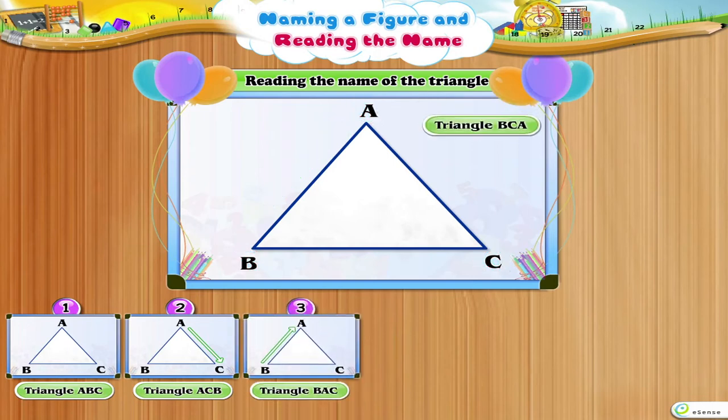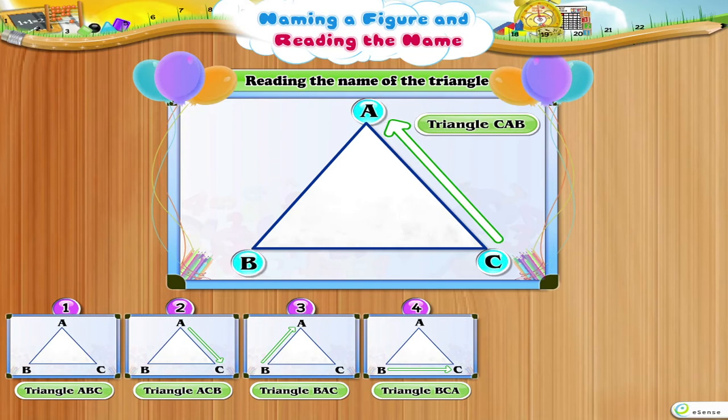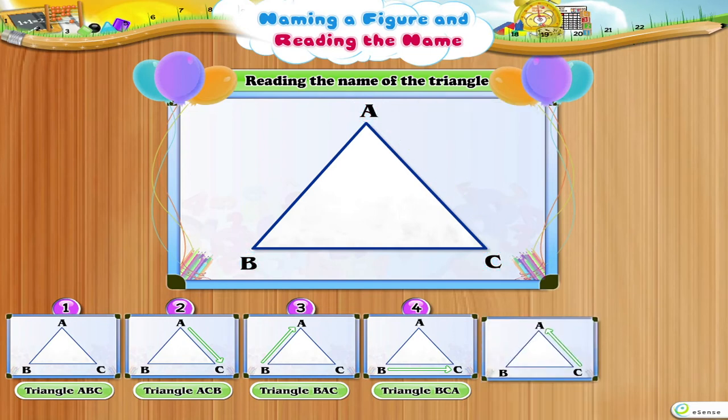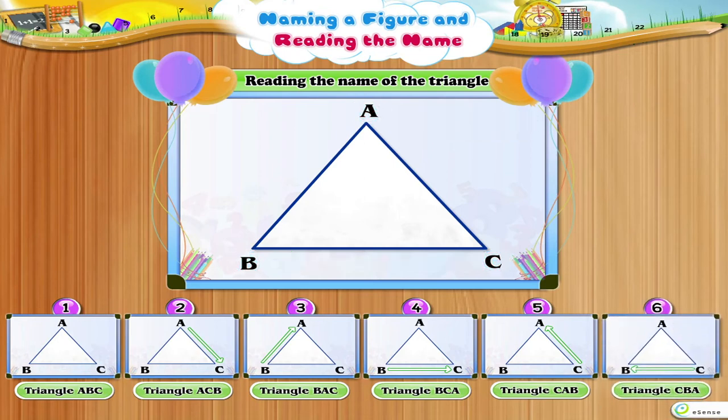Triangle B, C, A. Triangle C, A, B. Triangle C, B, A. Let us revise what we have just learned.